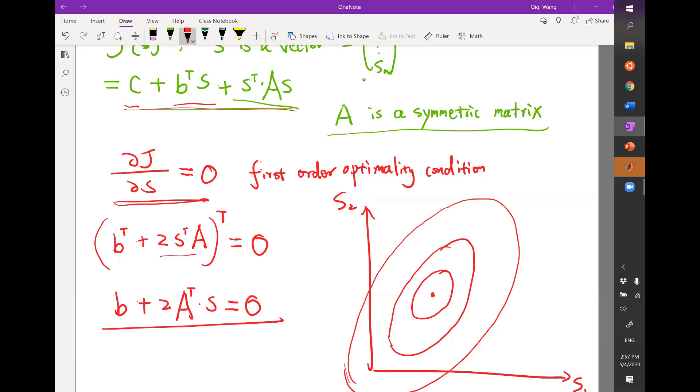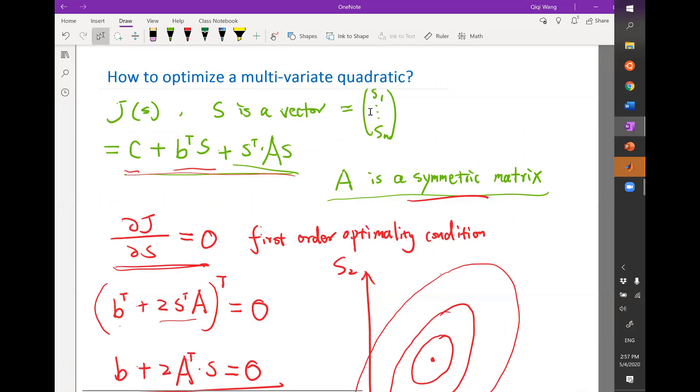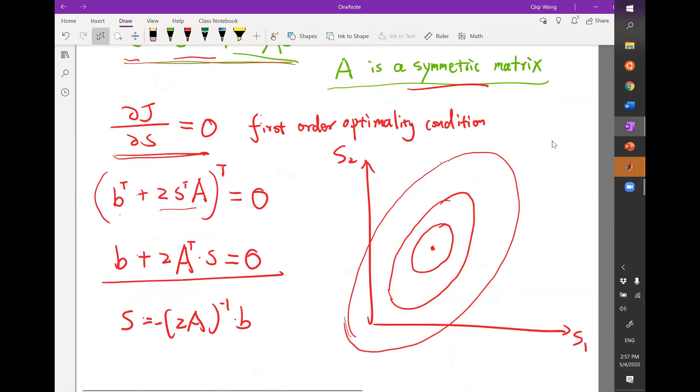So solving this linear system would give you S equal to 2A transpose inverse times B, with a negative sign. Now remember that A is a symmetric matrix, which means A transpose is equal to A. That means I can safely erase the transpose over here without changing the solution. So that's usually how we solve a quadratic optimization problem.